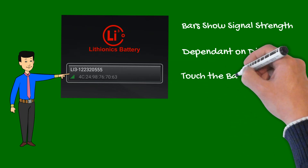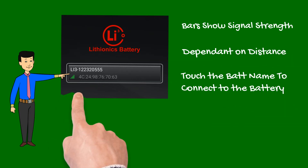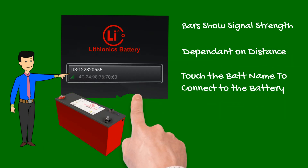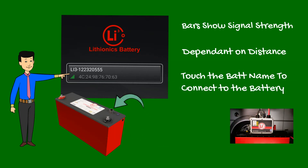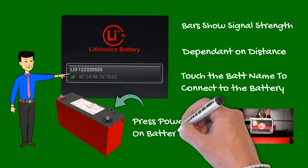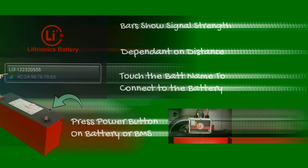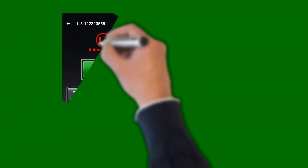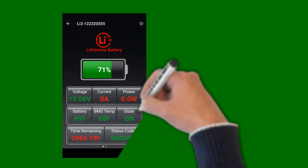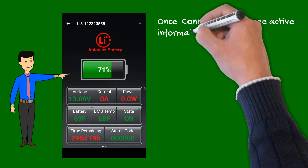Touch the battery name to connect to your battery. If your battery does not appear in the device list, make sure the battery or battery control module is turned on by pressing the power button. Once connected, the app shows the battery status screen where you can see active information about your battery.